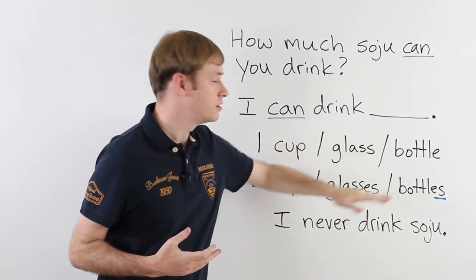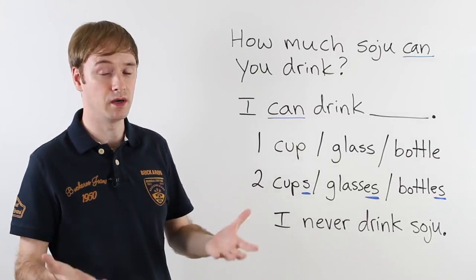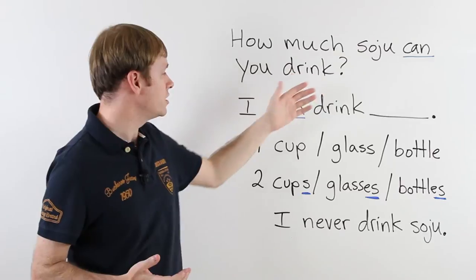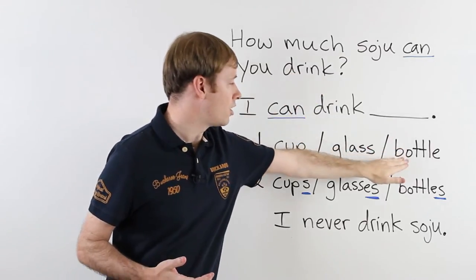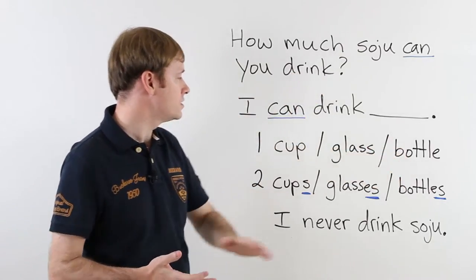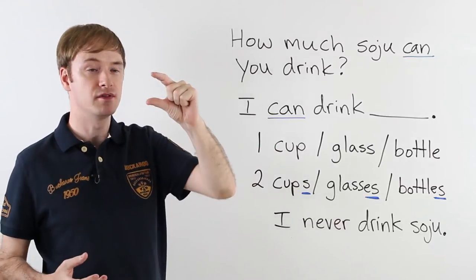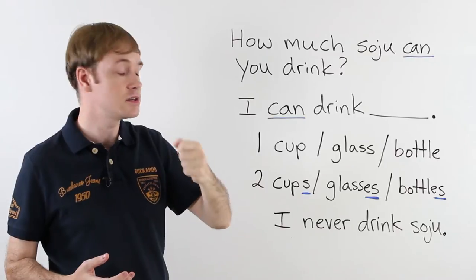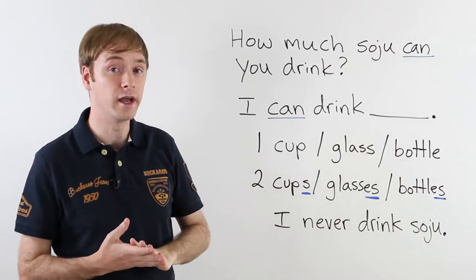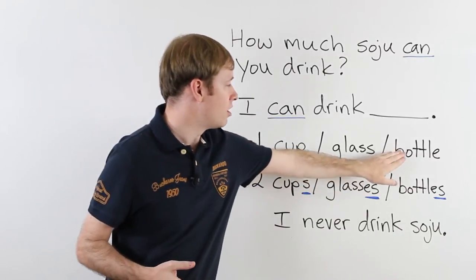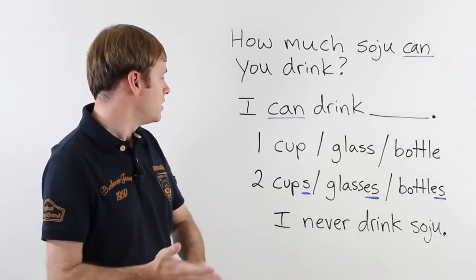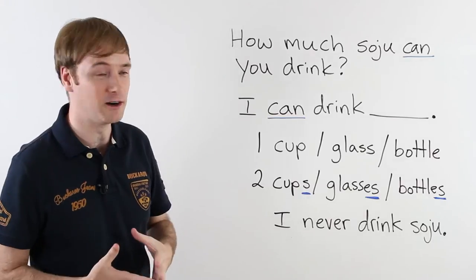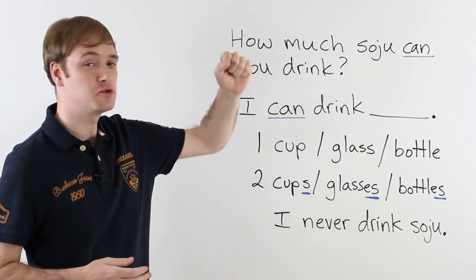Now bottle...that's ok for soju or beer. They both use bottles. So how much soju can you drink? I can drink one bottle. So again, you want to use a cup for the small cups of soju. Glass for beer glass. Also a wine glass. And the bottle can be used for anything. That's one. Now let's drink a little more.